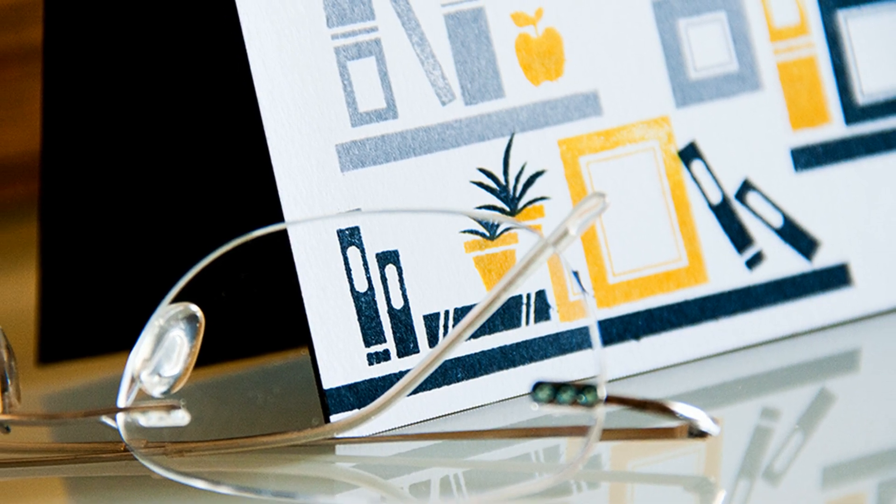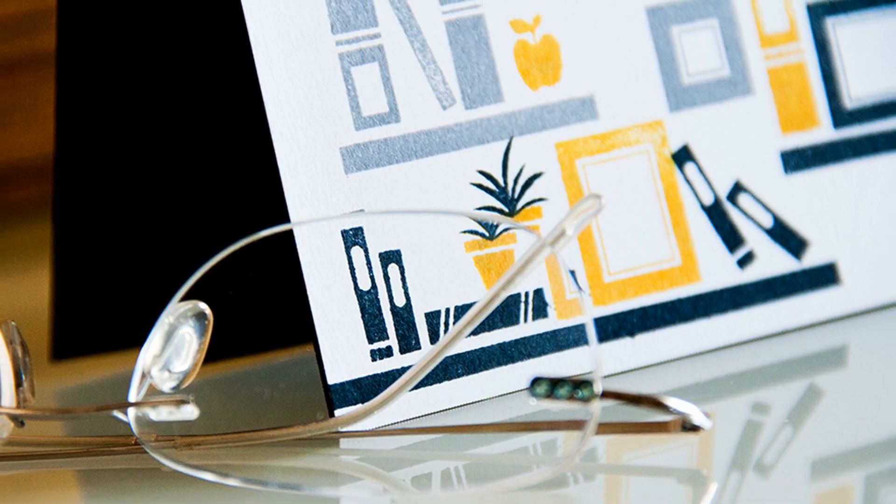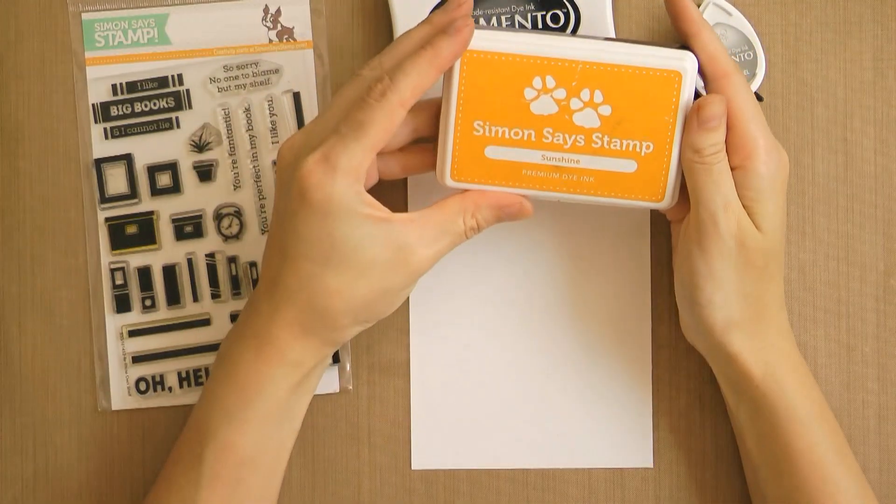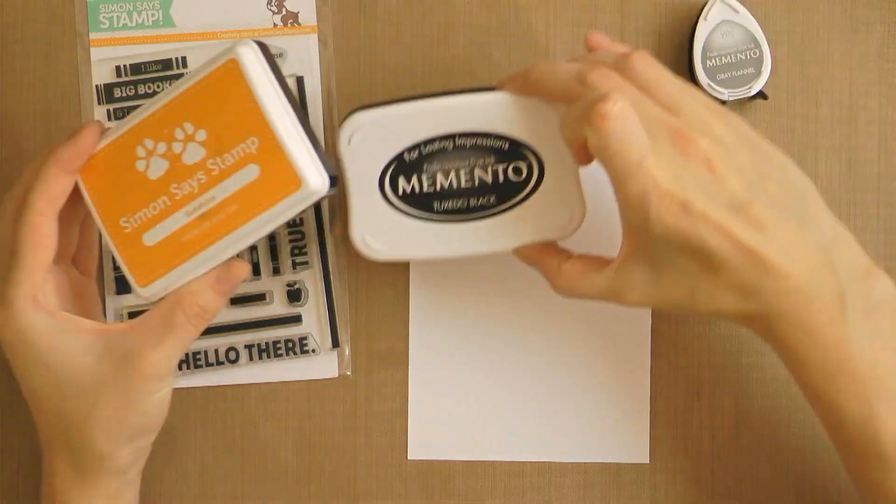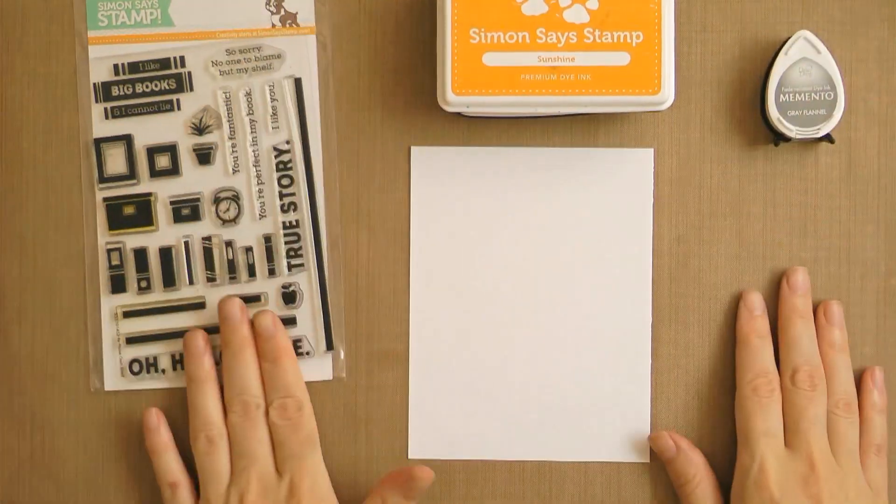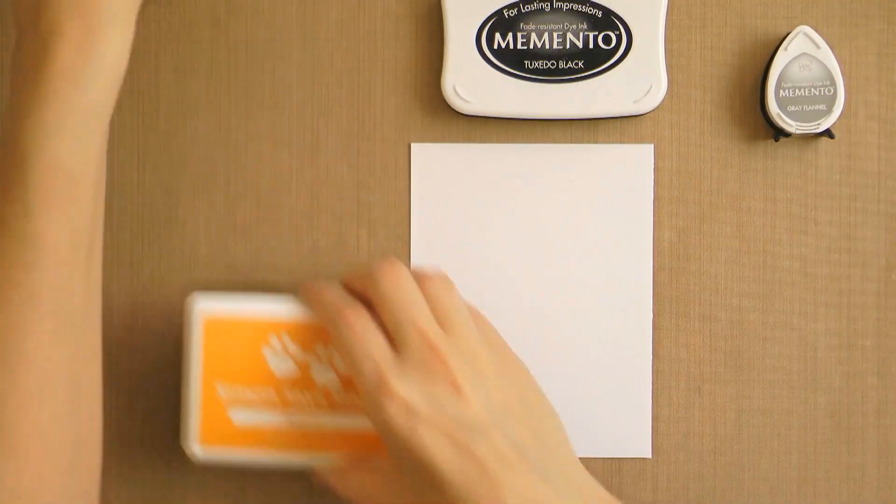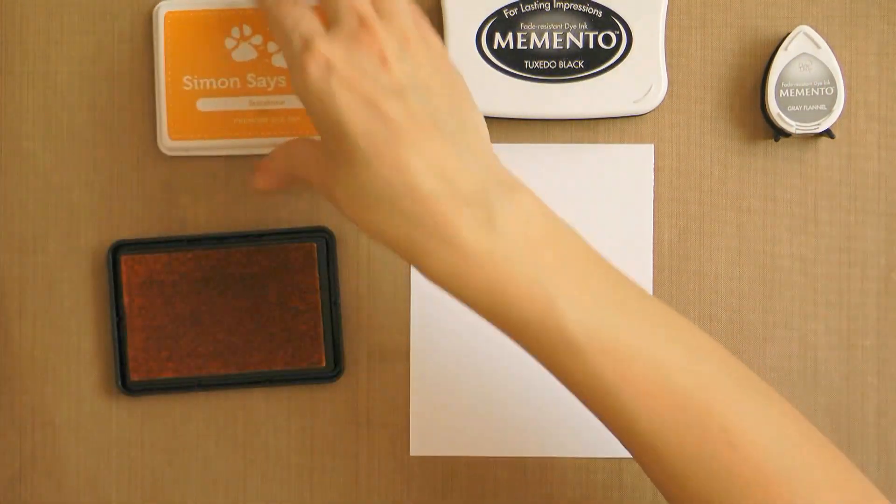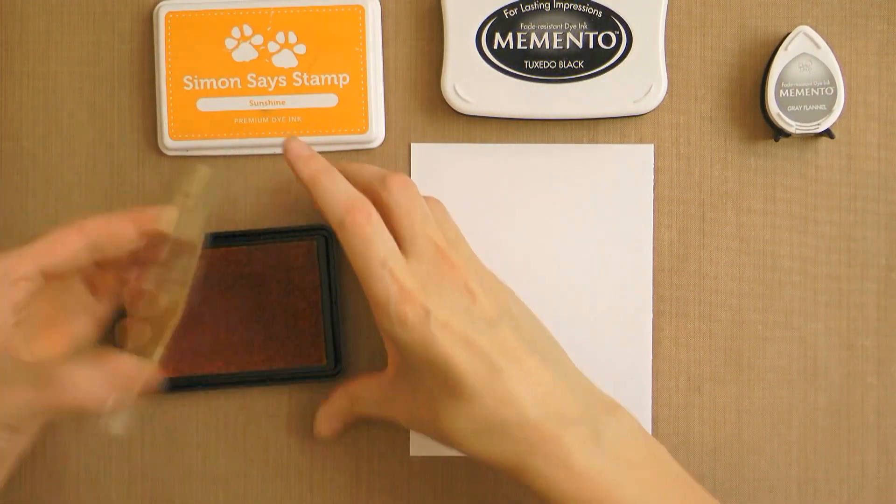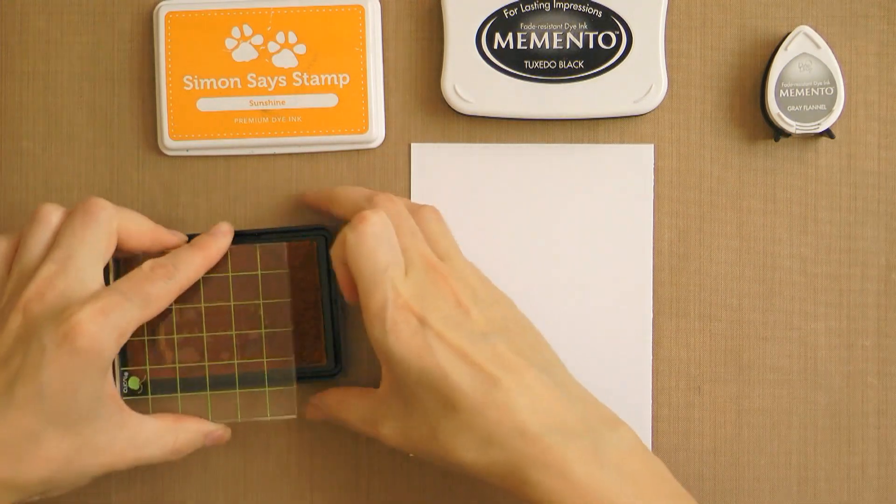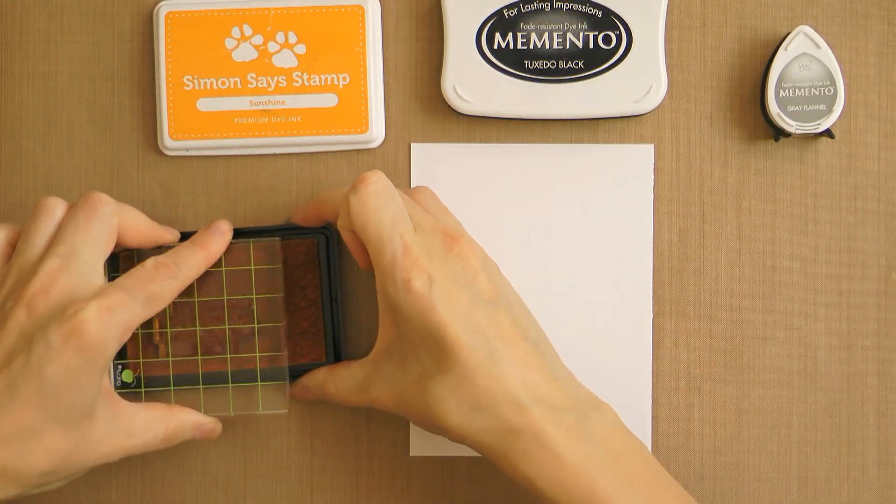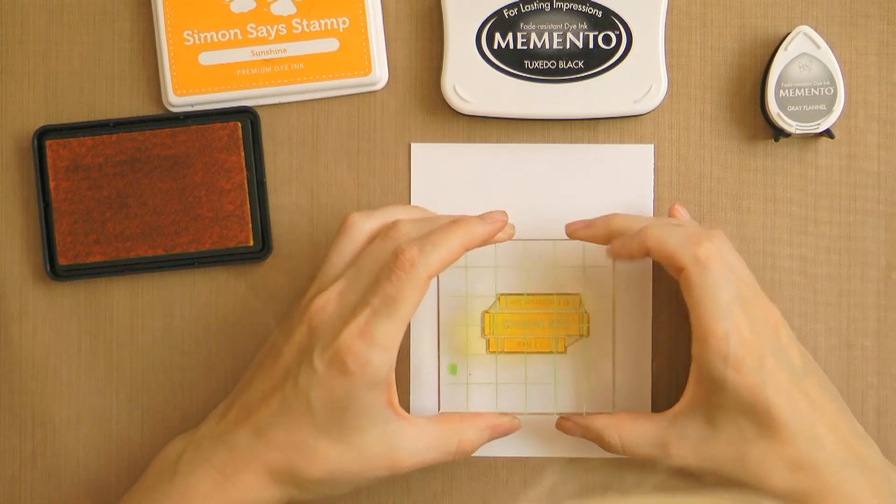This adhesive actually rubs off very easily with a finger or an eraser. Now for my stamping I'm going to go with my favorite color combo lately - yellow, gray and black. So here I have the Simon Says Stamp Sunshine ink, Memento Tuxedo Black and gray Dew Drop ink pads. And in case you're wondering why I chose those brands, there actually is no particular reason to it. So feel free to use whatever inks you like best.